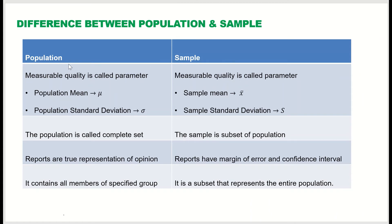Now let's look at the key differences between sample and population. For population, the measurable quantity is called a parameter. For example, the mean of the population is called the population mean, represented by the Greek letter mu (μ). The standard deviation of the population is represented by sigma (σ).